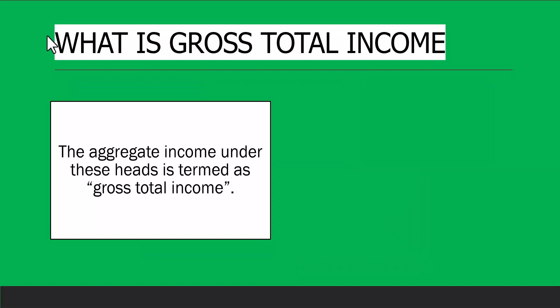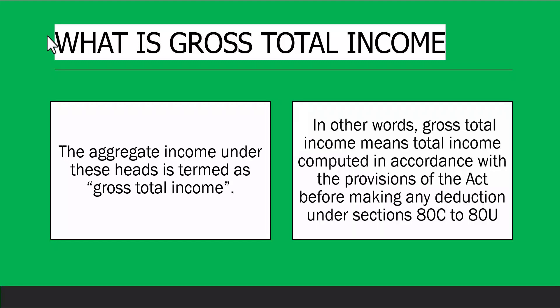The aggregate income under all five heads is termed as gross total income. First you calculate the income from all sources you have, and that is called the gross total income. In other words, gross total income means total income computed in accordance with the provisions of the Act before making any deduction under Section 80C to 80U. First you calculate income under all five heads, and after that you are allowed certain deductions.